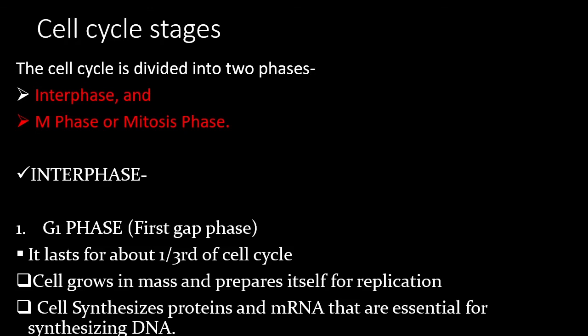Can you give examples of cells that do not divide in our body? Neurons and skeletal muscles and cardiac muscle cells. Also, mature red blood cells do not divide. Retinal receptor cells do not divide either. Fat cells in our body also do not divide. Mature bone cells also do not divide.